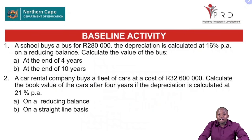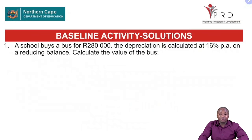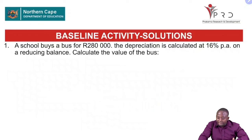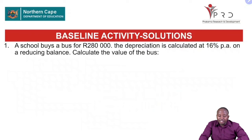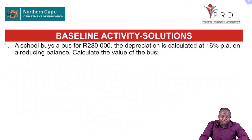Now let us discuss the solutions to our baseline activity. Number one: we are told that a school buys a bus for 280,000. The depreciation is calculated at 16% per annum on a reducing balance. Calculate the value of the bus. Remember, this is financial mathematics. The first step is always to collect the data. We need to know what is given in the question.